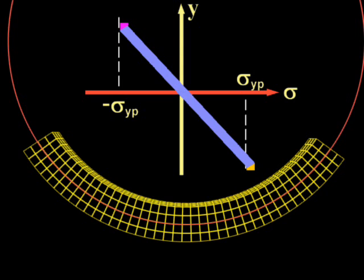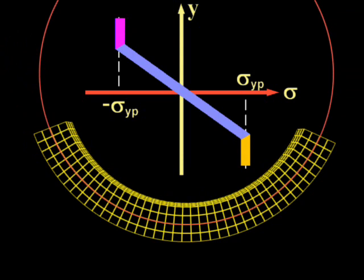As the beam is bent, some of the extreme fibers yield, that is, they reach and carry their yield stress.